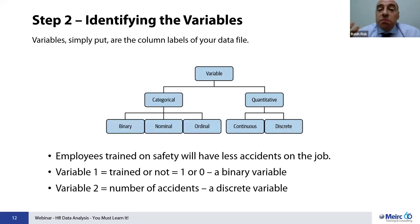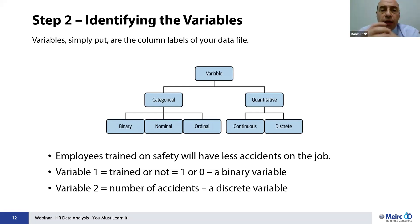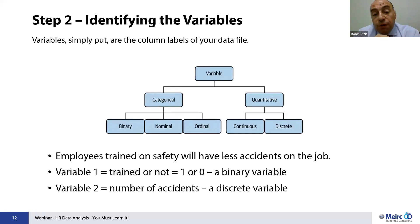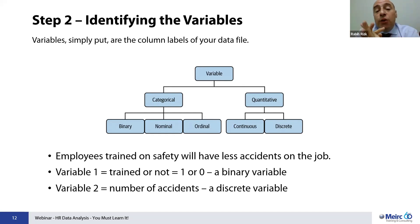Another type is the continuous variable — numerical values that can take an infinite number of values between two numbers. For example, temperature could be 37.12356, or height could also be a continuous quantitative variable. In step two, I want to take one of the hypotheses and identify the variables involved.